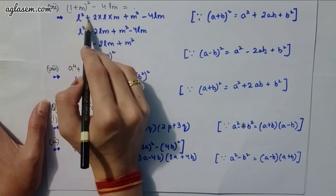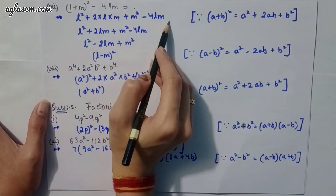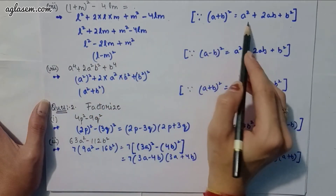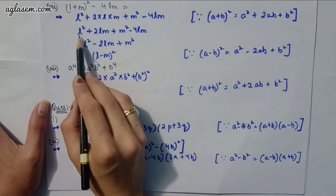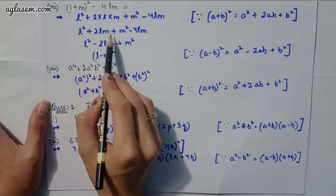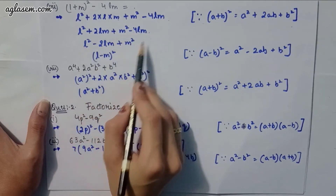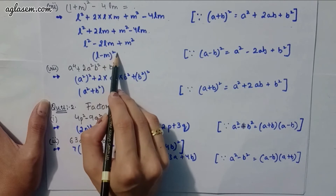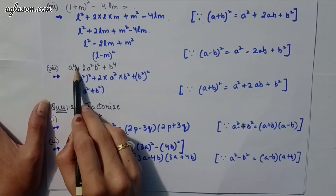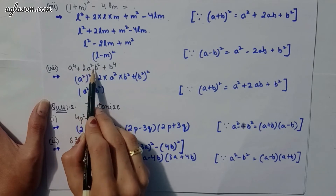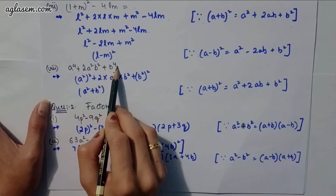Seventh part: (l + m)² − 4lm. Expanding: l² + 2lm + m² − 4lm = l² − 2lm + m², which equals (l − m)².